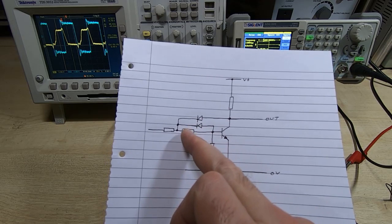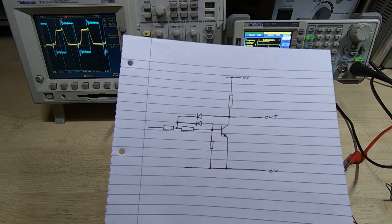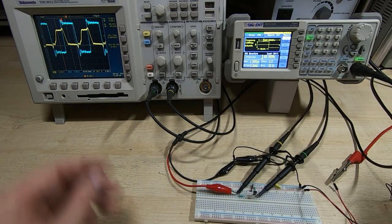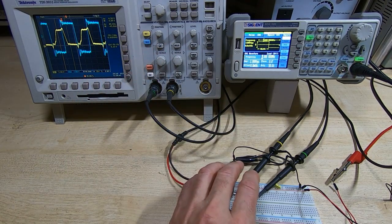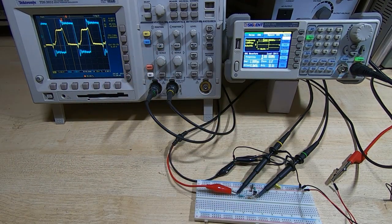And if we now look at the scope - I haven't changed any of the settings on here, all I've done is plug the two diodes into the breadboard - and at six megahertz, where you now see we're getting quite good switching...